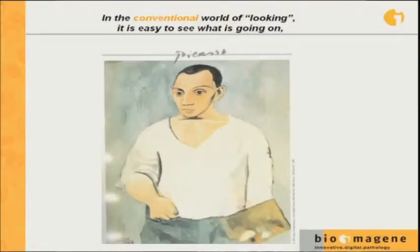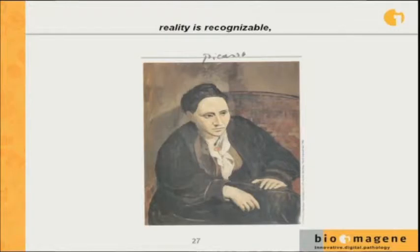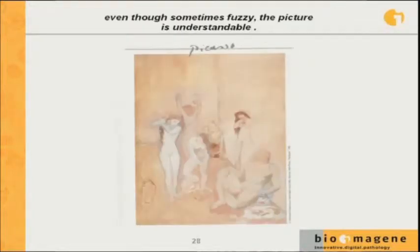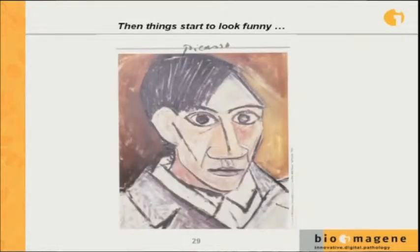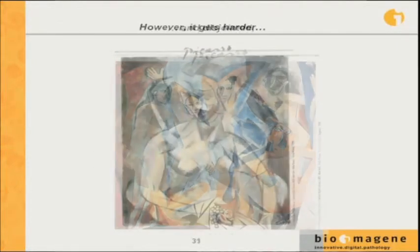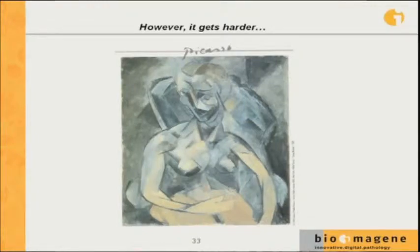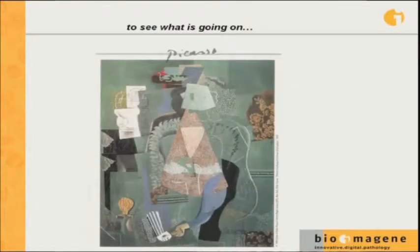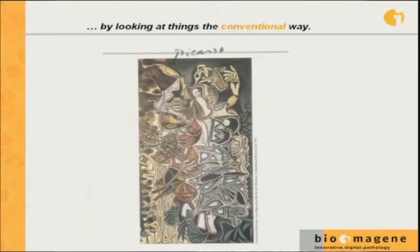If I could walk you through some pictures done by Picasso — in the conventional world of looking, it was easy to see what was going on. Reality is recognizable. And even though sometimes fuzzy, pictures are understandable. Then things start to look funny. The beginning of any disruptive innovation causes that — the normal dynamics of the economic state no longer work. Things become harder to recognize, disjointed. You can still tell what's going on, but it gets harder and harder, and finally it becomes impossible to see what's going on by looking at things the conventional way.